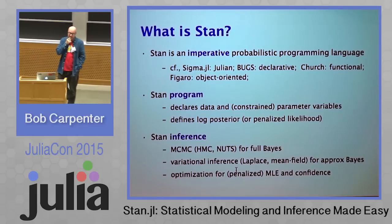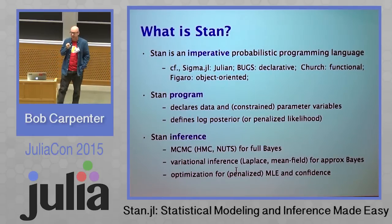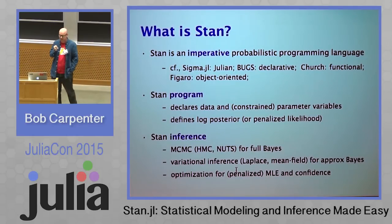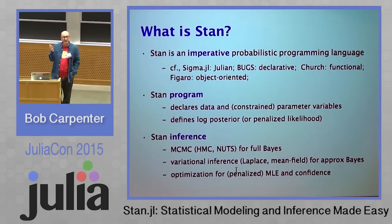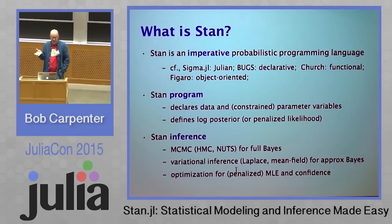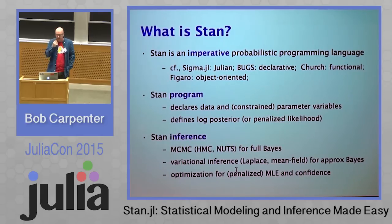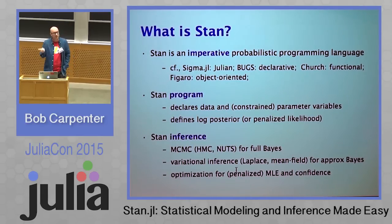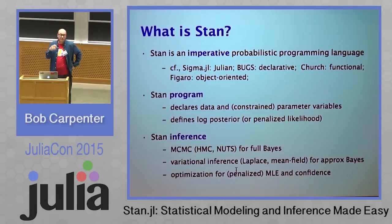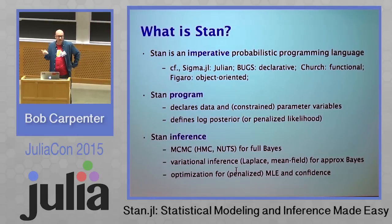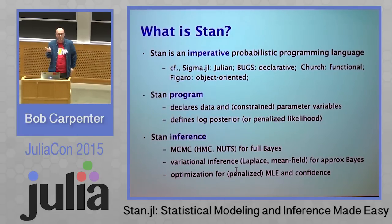What is Stan? Stan is an imperative probabilistic programming language. If you look at something like Sigma.jl, which is a probabilistic programming language, it's Julian — actually expressed in Julia. Bugs is something like this that's declarative in terms of declaring a graphical model. There's Church and all of its descendants, which started as functional programming languages. Figaro is an object-oriented one.